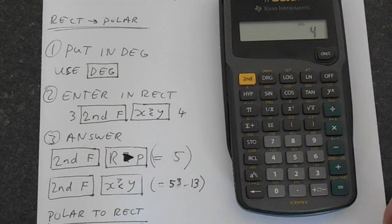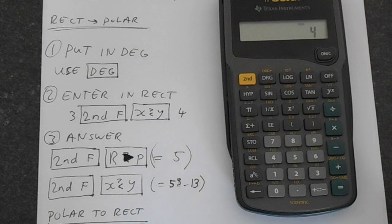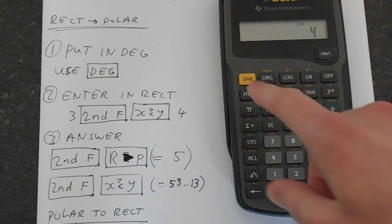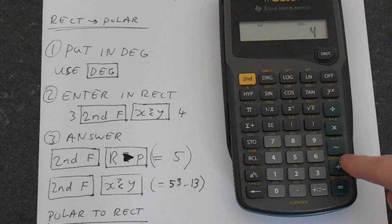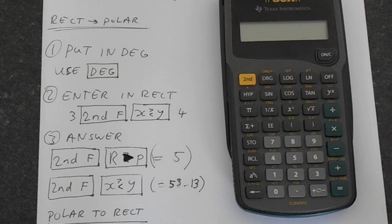So let's do the conversion. We do second function, and then we want rectangular to polar. So that's r to p, second function, and then r to p, and the calculator calculates that.